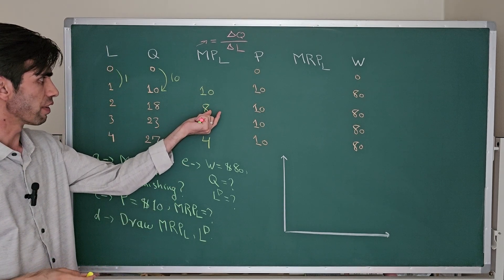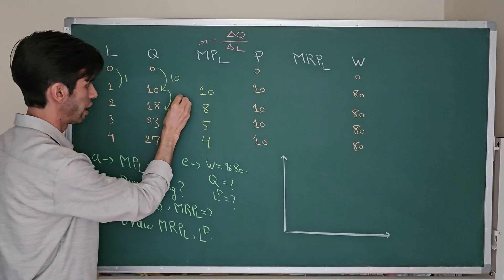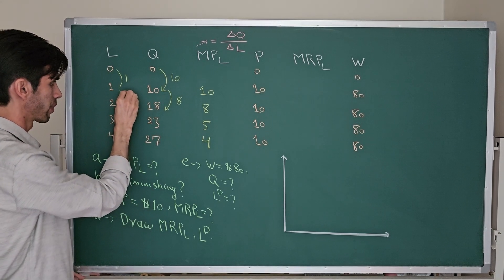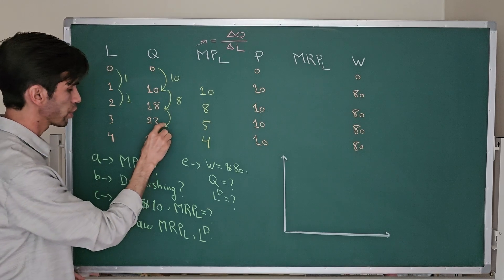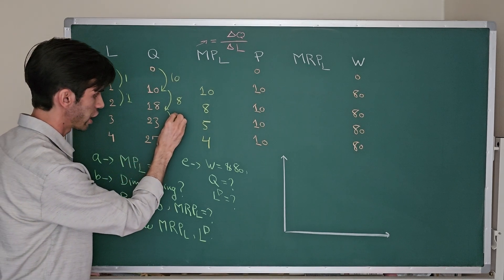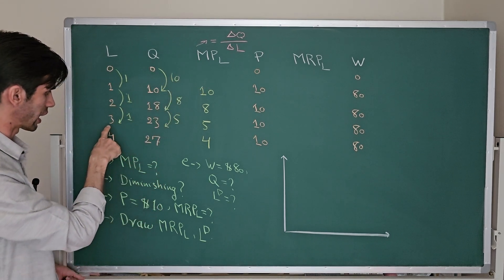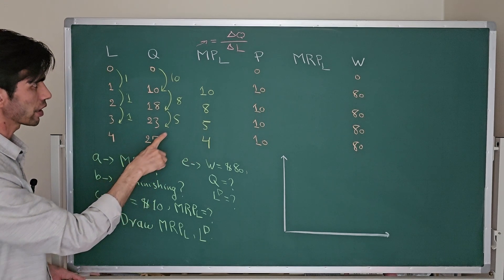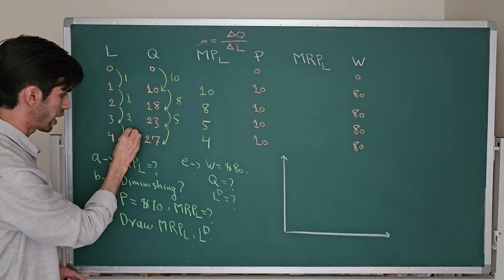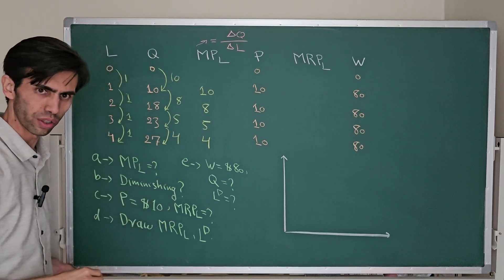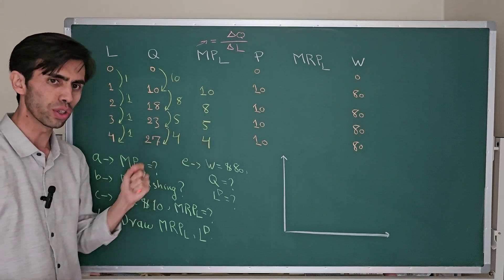The marginal product of labor for the second worker: moving from 10 to 18, the change in output is 8, and the change in labor is 1. So 8 divided by 1 equals 8. When hiring the third worker, output moves from 18 to 23, the change is 5, and the change in labor is 1, so the marginal product of labor is 5. For the fourth worker, moving from 3 to 4, the change in labor is 1 and the change in output is 4, so the marginal product of labor is 4.